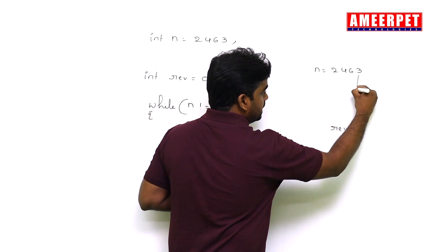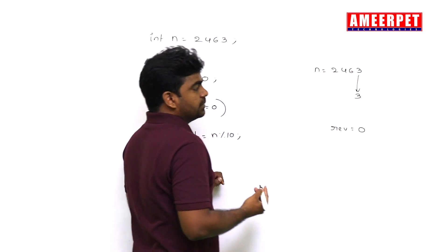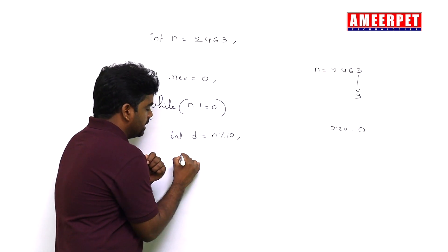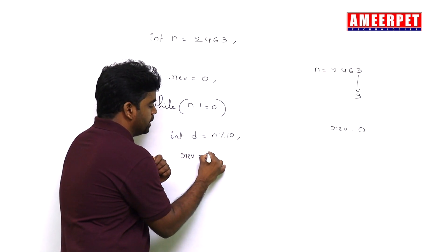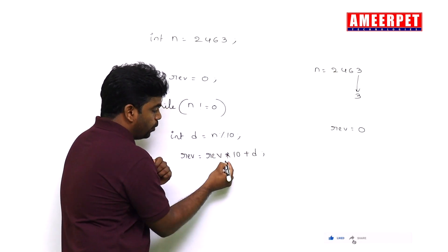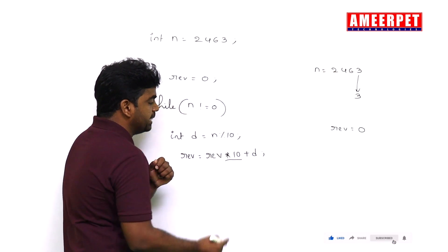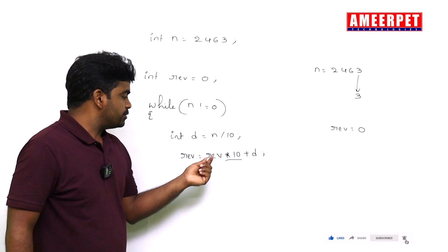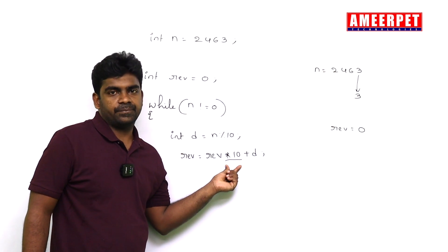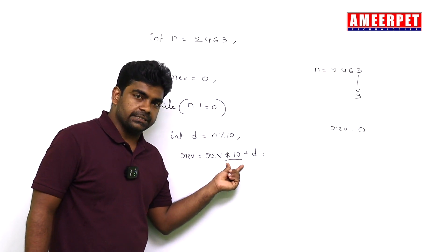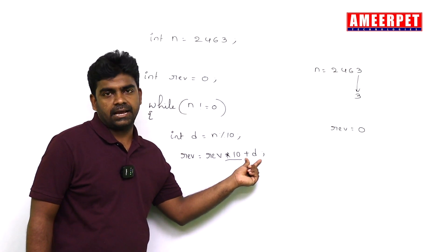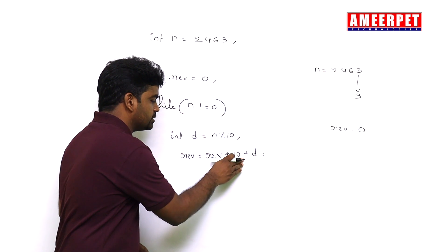So get the digit, that is 3. How you are adding means reverse equals to reverse into 10 plus d only. Instead of adding directly, we are performing multiplication operation with 10, 10 multiplication operation with the 10 plus the d we are adding, nothing but the digit we are adding as usual.